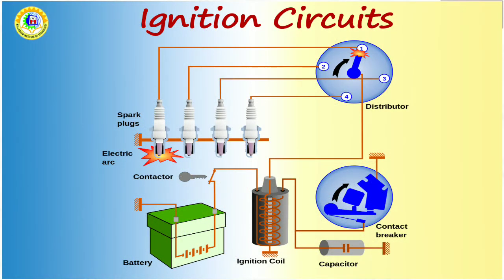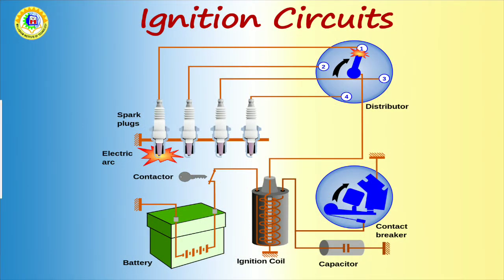The spark plug provides the spark in the engine cylinder. This battery ignition system for a 4-cylinder petrol engine mainly consists of a 6 or 12-volt battery, ammeter, ignition switch, auto transformer and contact breaker, capacitor, distributor, rotor, contact point, and spark plug.